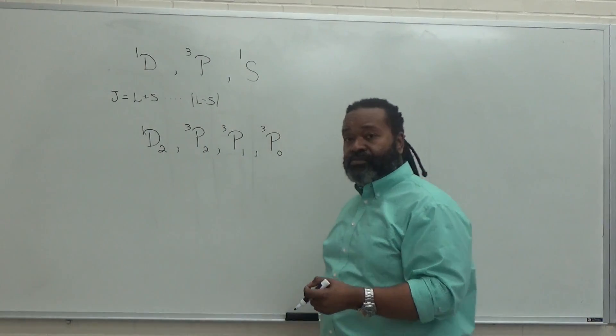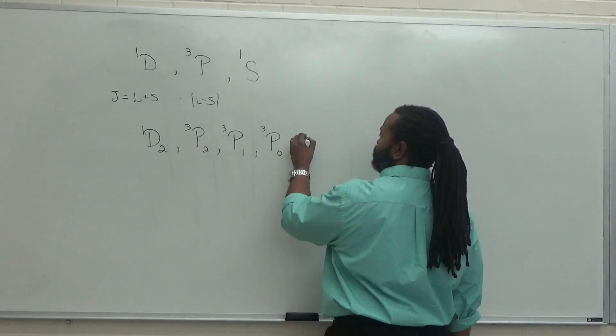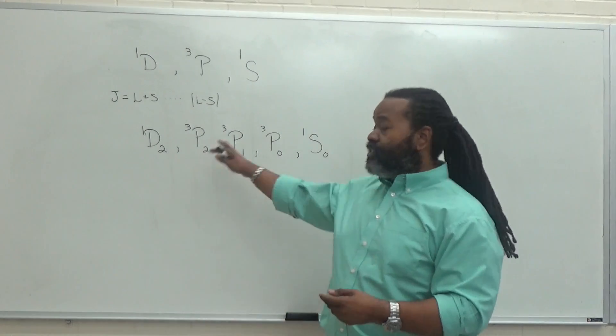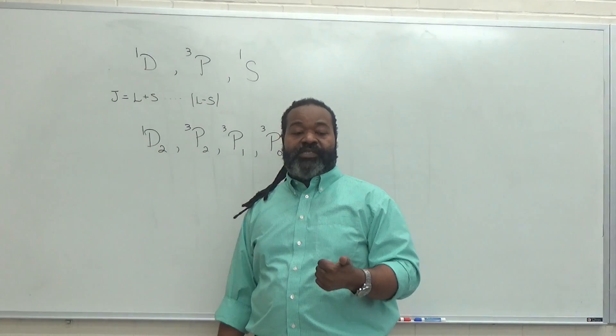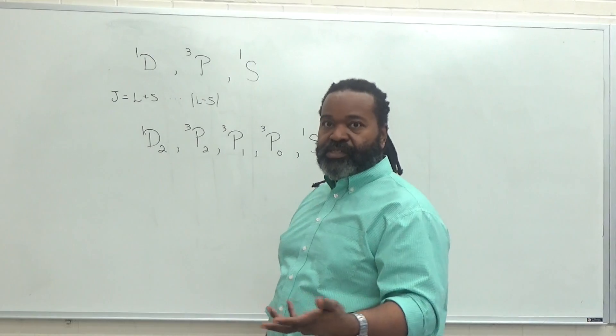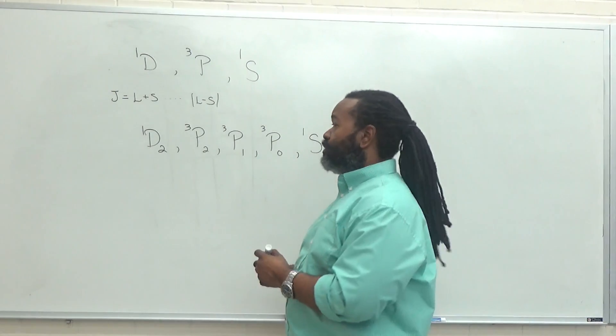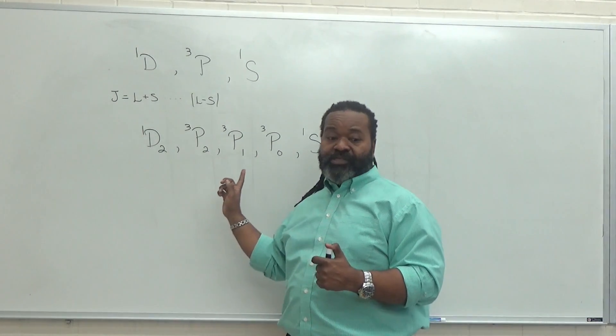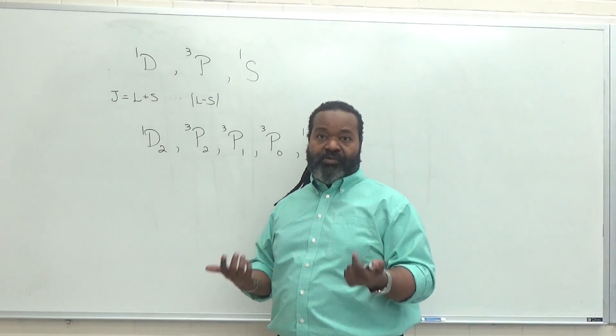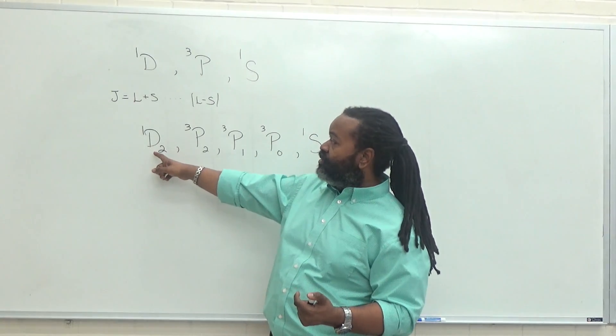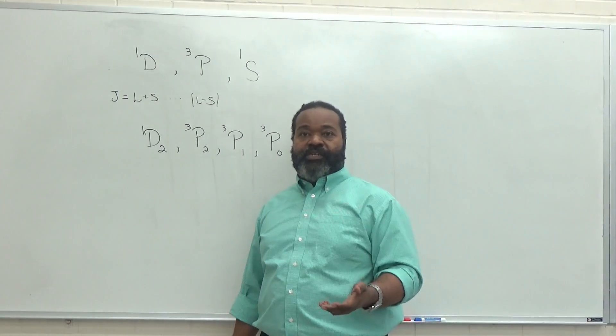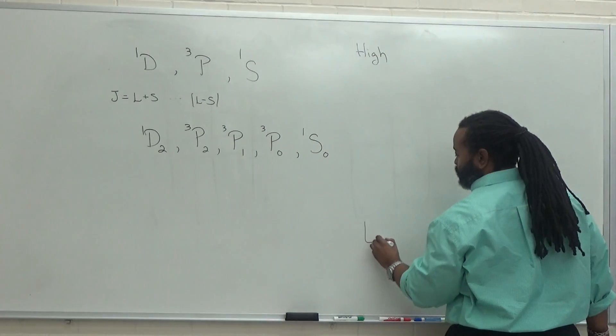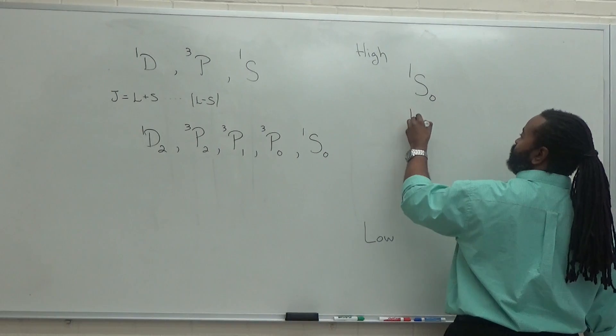For the singlet S, L and S are both zero. So L minus S and L plus S are the same thing. So we have a singlet S zero. So these are all the possibilities. And we want to predict the order. So these are not written out in order. First thing we do is we recognize that the ground state is going to have the largest spin multiplicity. The triplets are lower than singlets, quartets are lower than doublets, etc. So the triplets are going to be lower than these two singlets. Now if we have an identical spin, which we do with our three triplet states, the largest L is going to have lower energy. That doesn't help us here, but it helps us differentiate between singlet D2 and singlet S0. The larger L goes with the D, so the singlet S is our highest energy state. So high to low. So we would predict that singlet S0 sits higher than singlet D2.